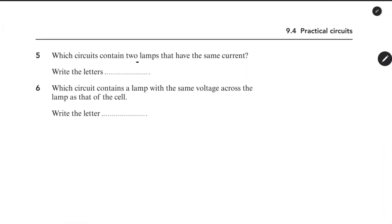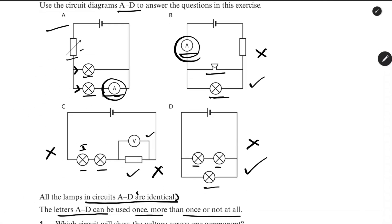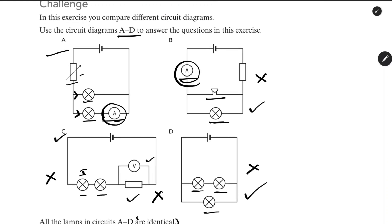Fifth question: which circuits contain two lamps that have the same current? In a series circuit, both lamps carry the same current. In a parallel circuit with two equal lamps, each branch also carries the same current. Circuit B has only one lamp. So the answer is A, C, and D.